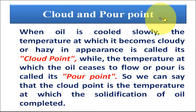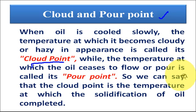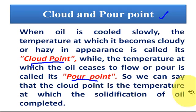The first property is cloud and pour point. When oil is cooled slowly, the temperature at which it becomes cloudy or hazy in appearance is called the cloud point — this is the temperature at which solidification of the lubricant starts. The temperature at which the oil ceases to flow is called the pour point — this is the temperature at which solidification of the lubricating oil is completed.